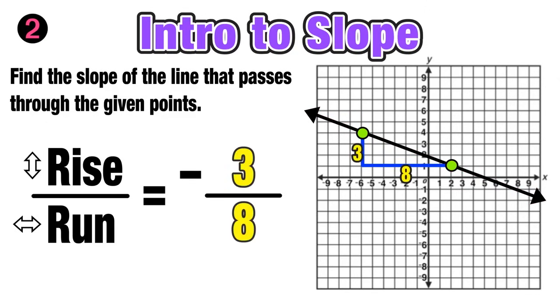And then we can just count. So the rise downward was three units and the run to the right was eight units, so the slope of this line is negative three over eight, which cannot be reduced, so that's going to be our final answer, the slope of this line.